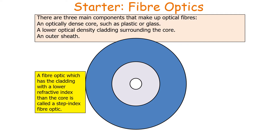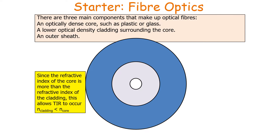A fibre optic which has cladding with a lower refractive index than the core's refractive index is called a step index fibre optic. This is important since you need the refractive index of the core to be greater than the refractive index of the cladding to allow for total internal reflection to occur. So the refractive index of the core, N1, must be greater than the refractive index of the cladding, N2.